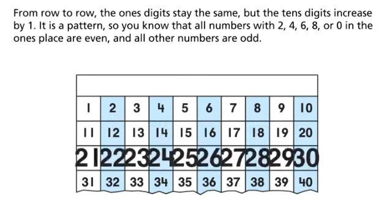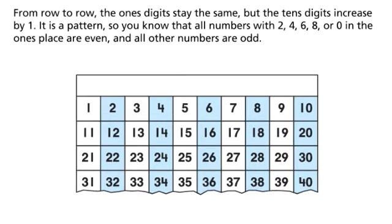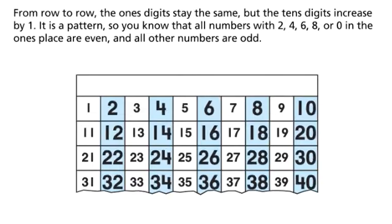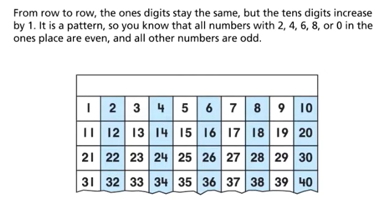From row to row, the 1's digits stay the same, but the 10's digits increase by 1. It is a pattern, so you know that all numbers with 2, 4, 6, 8, or 0 in the 1's place are even, and all other numbers are odd.